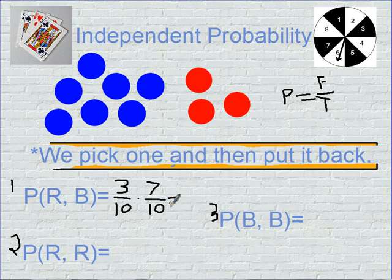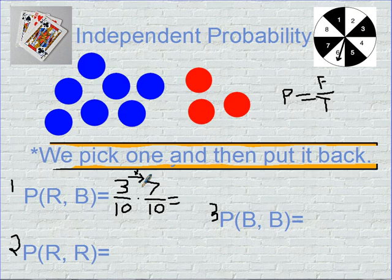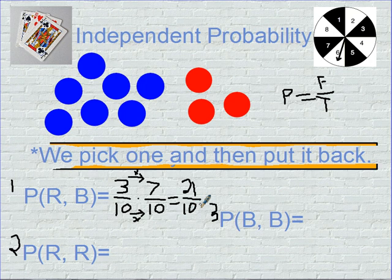I check to see if I can reduce — check up and down, can't reduce any of those; check diagonally, three and ten, seven and ten, can't reduce. So I multiply across. Whenever I multiply fractions, I multiply across. I have three times seven, which is twenty-one, and ten times ten, which is one hundred.